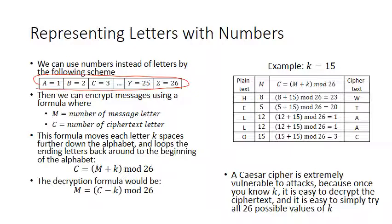If we're using numbers instead of letters, we can write actual formulas for how to encrypt and decrypt. The variables we'll use: M stands for the number of the message letter — so if your message is the letter B, then M would be two. C stands for the number of the ciphertext letter — so if the ciphertext is the letter Z, then C would be 26.